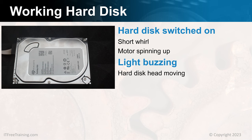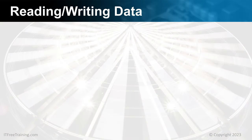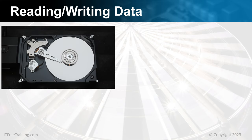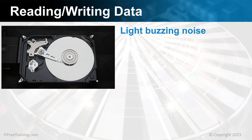To get a better understanding of what is occurring, I will look at what happens when reading and writing data to the hard disk. For this demonstration, I will remove the cover from the hard disk so we can see what is happening inside. Hard disks are easily damaged — a fingerprint, a hair, or even a speck of dust can stop the hard drive reading the platter. If you remove the cover from a hard disk, you are exposing the platter to these things, so don't expect the hard disk to ever work again. I will switch on the hard disk and you can hear a light buzzing noise as the hard disk starts up and the head moves over the platter.